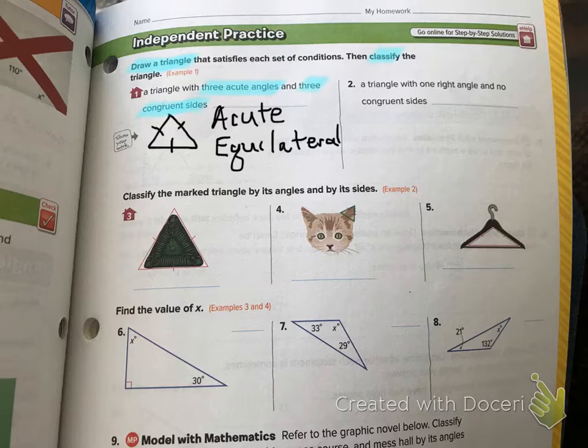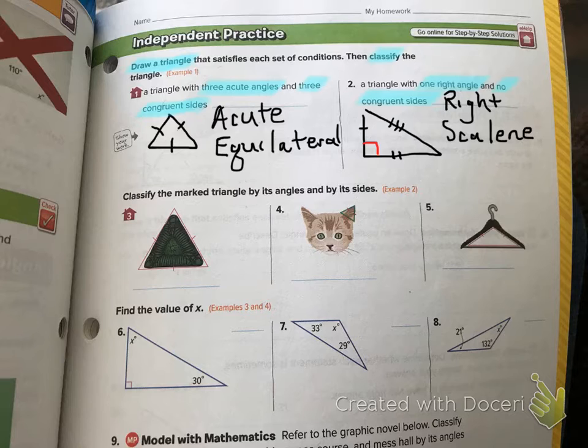Okay, moving on to question number 2: a triangle with one right angle and no congruent sides. Once again, I'm going to ask you to refer back to the diagram on page 556. Try this one on your own. If you need to go ahead and pause the video, go ahead and do that.